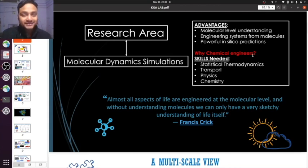Why are chemical engineers needed here? The kind of skills that are needed to do this are knowledge of statistical thermodynamics, transport process, physics, and chemistry. We have all this information, so we are all set to do this. I'll just read out one quote said by Francis Crick: Almost all aspects of life are engineered at the molecular level. Without understanding molecules, we can only have a very sketchy understanding of life itself. Now you can imagine how important it is to have this molecular-level understanding of the processes.